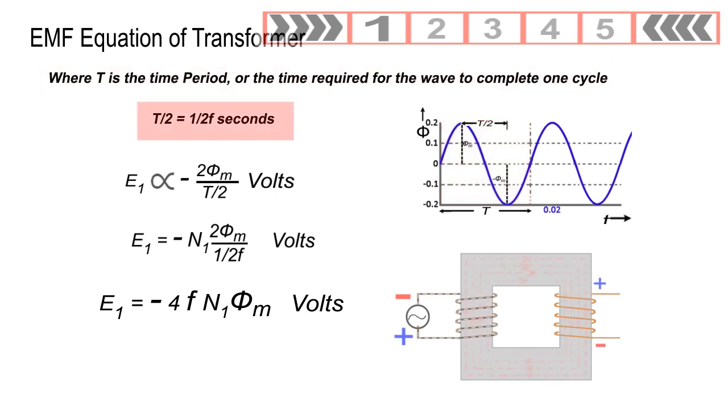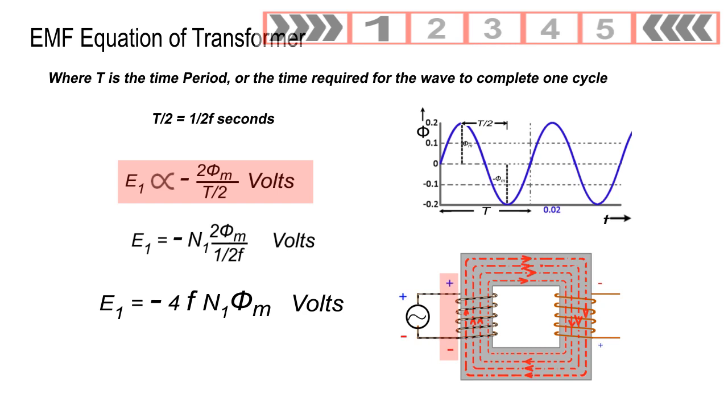Time T by 2 is equal to 1 by 2f seconds where f is frequency. The average induced EMF in the primary winding is proportional to the total change of the flux divided by the time, i.e., E1 is directly proportional to minus 2φM by T by 2 volts.